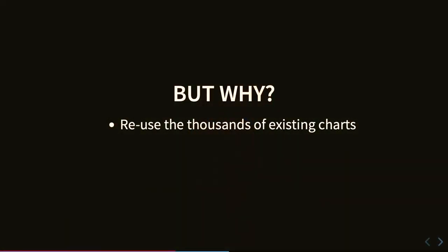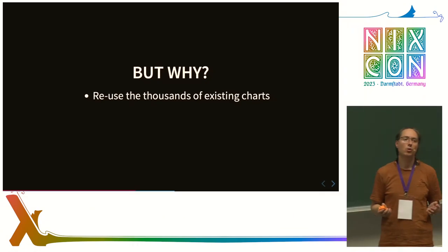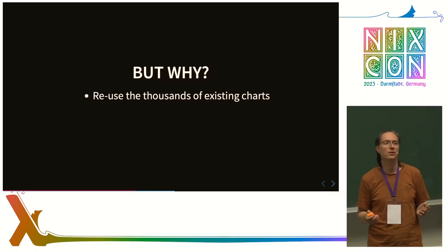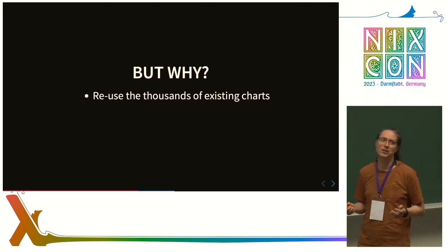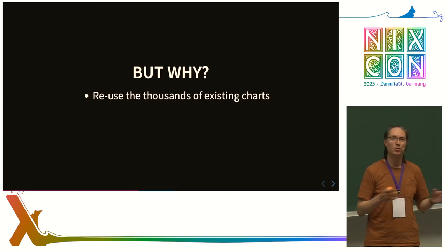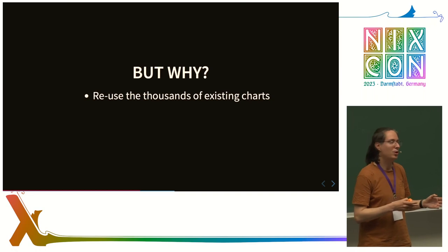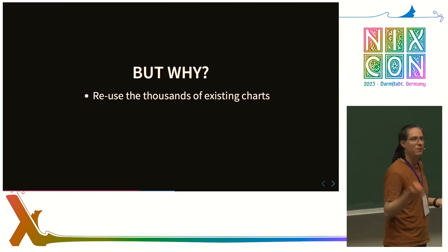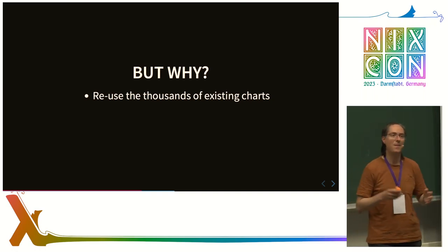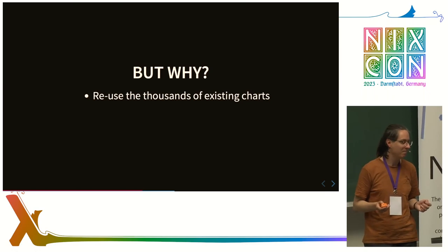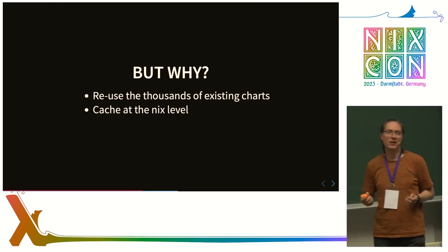But why would you even want to do that? Helm is de facto standard thing to distribute Kubernetes resources. If you want to use some open source product in your cluster, there's a chance someone wrote a Helm chart for that. Oftentimes those are really hard to extend. The way you do that is basically you fork the repository, do local modifications, and then you're forever bound to rebase against the original code.